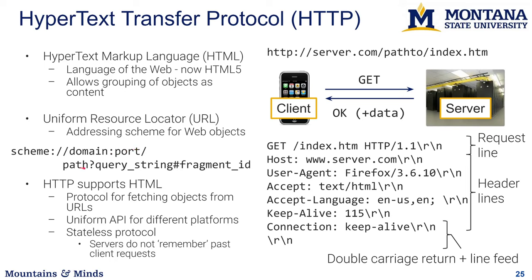Then you can specify a path for some resource — for example, some path to index.htm. If you want to pass other parameters, you can have a query string after a question mark where you would have some variable equals something else. You can also have a fragment ID, for example for finding anchors on a page. All these things together can form a URL, and most of the stuff is actually optional — you can just type in the domain, like google.com.